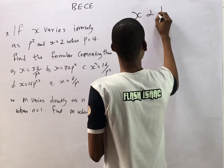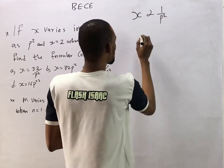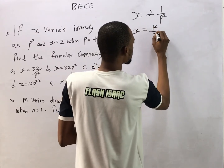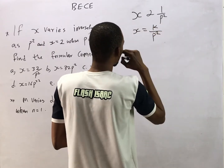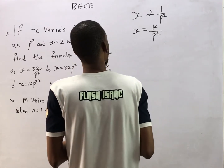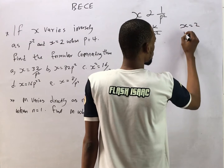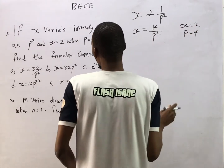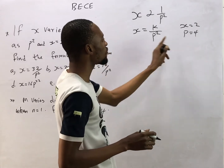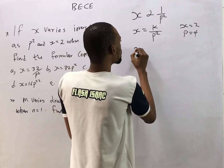Next: s varies inversely as p squared. This implies that s is proportional to 1/p², which also implies that s = k/p². It says s = 2 when p = 4. This first statement enables us to find k.